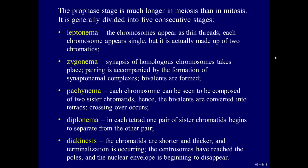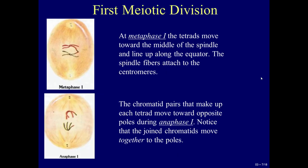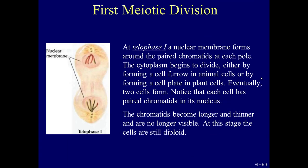At metaphase I, the tetrads move toward the middle of the spindle and line up along the equator. The spindle fibers attach to the centromeres. The chromatid pairs that make up each tetrad move toward opposite poles during anaphase I. Notice that the joined chromatids move together to the poles — whole chromosomes move to the poles. At telophase I, a nuclear membrane forms around the paired chromatids at each pole. The cytoplasm begins to divide, either by forming a cell furrow in animal cells or by forming a cell plate in plant cells.